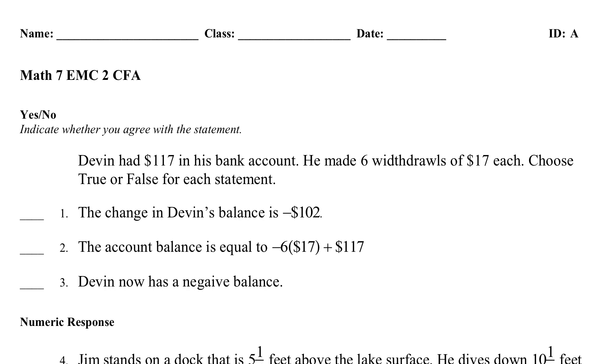You're not here to hear me babble. So, indicate yes or no. Devin had $117 in his bank account. He made 6 withdrawals of $17 each. Choose true or false for each statement. Let's first put this together here. He had $117, and he made 6 withdrawals. So, that would be, you have to subtract 6 withdrawals of $17 each. You have to multiply 6 times 17.